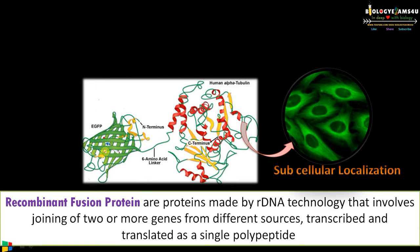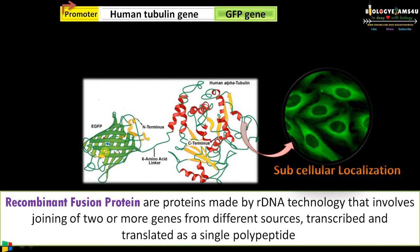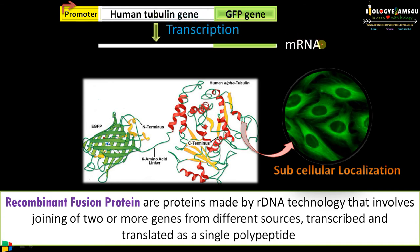Now let us see how this is made. First, we make a gene construct with a promoter sequence, followed by the gene of the protein of interest — the human tubulin gene — along with the green fluorescent protein gene. This gene construct is incorporated into a suitable vector, then transformed into a suitable host, where it is transcribed as a single mRNA and translated as a fusion protein.